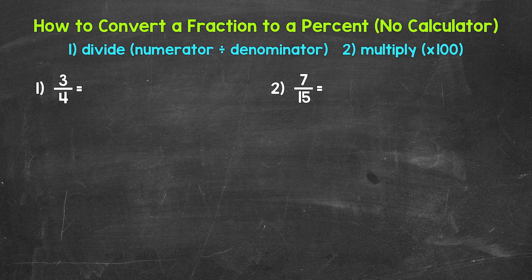Now when converting fractions to percents, we can do this by dividing and then multiplying. We take the fraction and divide the numerator by the denominator — the top divided by the bottom. This will give us a decimal. We then need to convert that decimal to a percent by multiplying it by 100.